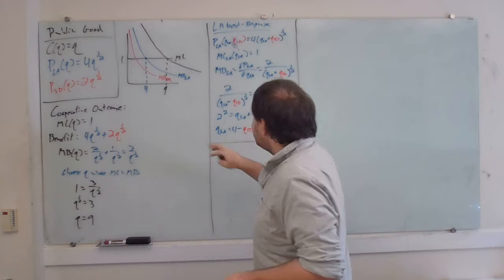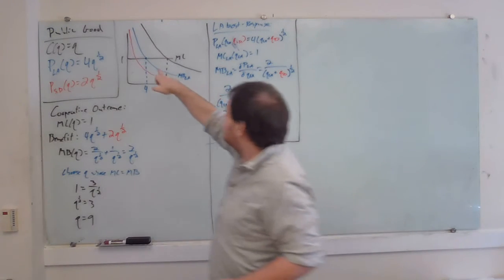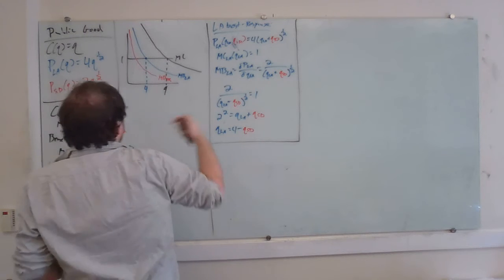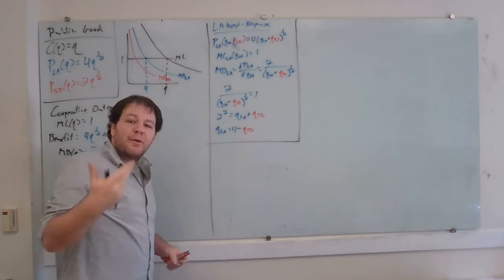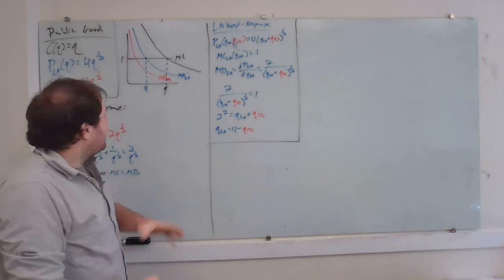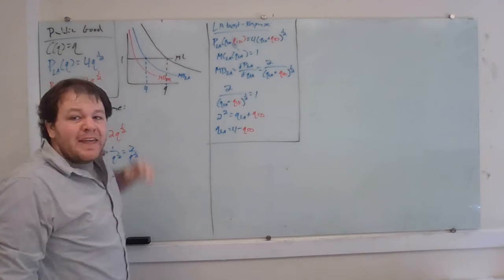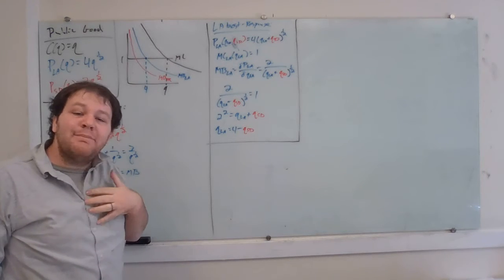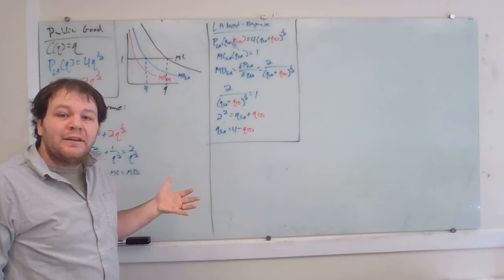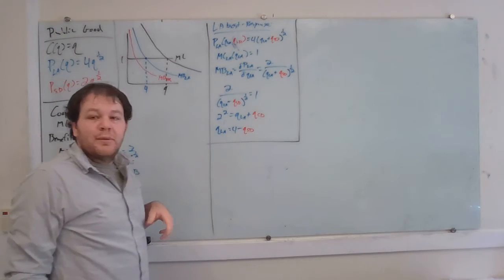The reason this happens is that with a constant marginal cost, regardless of whether San Diego has paid for 1, 2, 3, or 4 hours, that 5th hour is going to cost LA the same amount and have the same benefit to them regardless of what San Diego has already contributed. So they're never going to be willing to contribute more than 4.